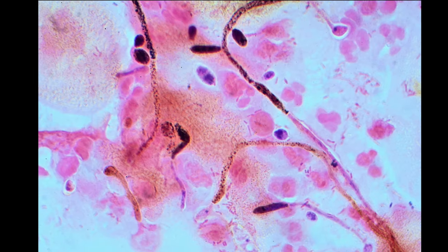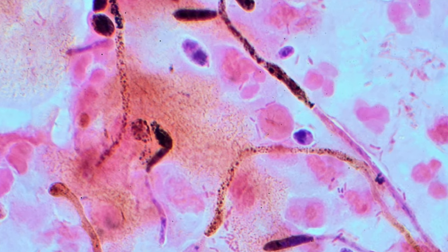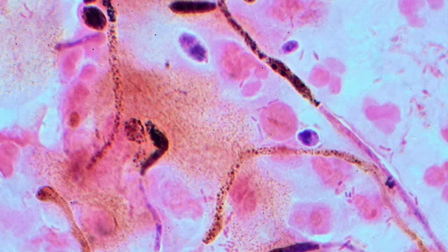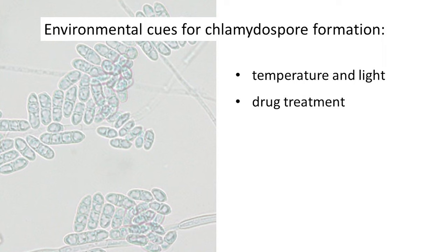The formation of fungal chlamydospores is influenced by a variety of environmental factors that can be species-specific. These factors exert conditions that are often incompatible with the normal physiological processes of certain species of fungus. Environmental triggers can include changes in temperature and lighting, drug treatment, and the presence of specific chemical signals from the fungal host.